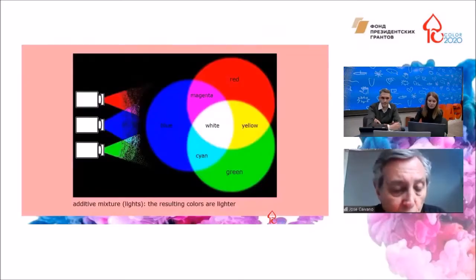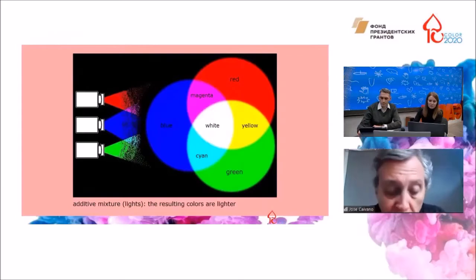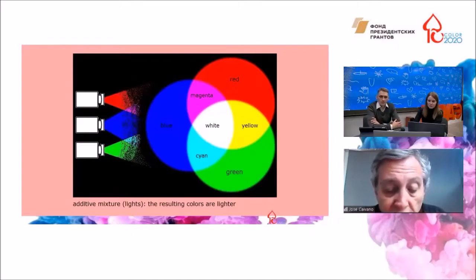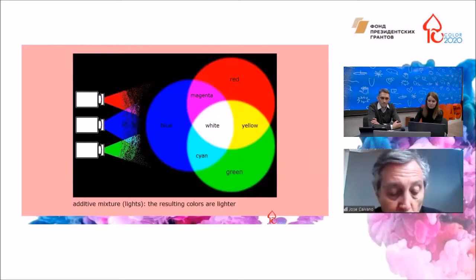In regard to color mixtures, usually we take for granted that there are three categories. Additive mixing, the sum of colored light projected on a surface, yields colors that are lighter than the original colors.